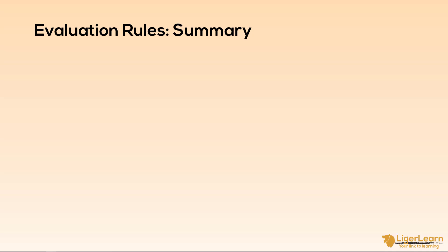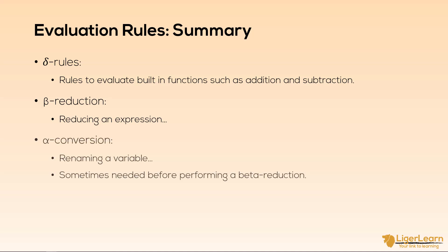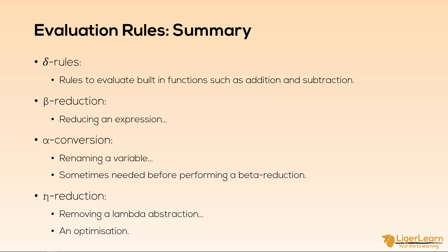Let's summarize each of the evaluation rules. Delta rules are used to evaluate built-in functions such as mathematical functions. Beta rules are used to reduce an expression — a beta reduction is the result of applying a lambda abstraction to its argument by copying the body and replacing all free occurrences of the formal parameter with the argument. An alpha conversion is used to rename variables within a lambda expression, sometimes needed before performing a beta reduction to prevent the name capture problem. An eta reduction is an optimization which can replace one lambda expression with another simpler one.